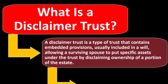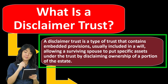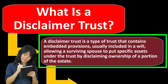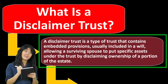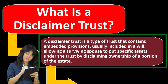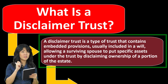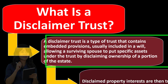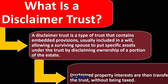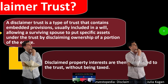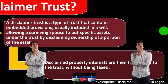A disclaimer trust is a type of trust that contains embedded provisions, usually included in a will, allowing a surviving spouse to put specific assets under the trust by disclaiming ownership of a portion of the estate. Disclaimed property interests are then transferred to the trust without being taxed.